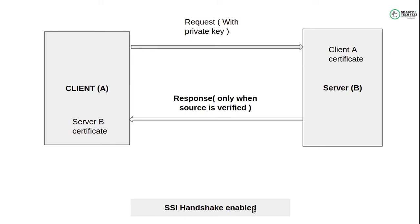Today in this second part, we will understand how to make a curl request to the server. We have already understood the request-response diagram when SSL handshaking is enabled. Now we will actually start working with SSL handshaking in our application. Before working with the application, you should first try with the curl request. If you are not aware of what we covered, please watch the first part first.